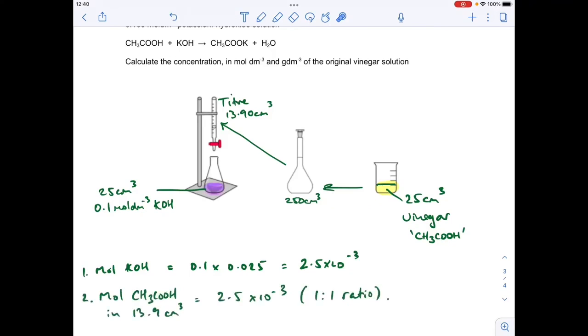Once we know the moles in the 13.9 cm cubed titer, we need to scale up to how many moles must have been in this 250 cm cubed, and hence in the original undiluted vinegar solution. The way we do that is we divide the moles in the 13.9 by 13.9, and that gives us the moles in 1 cm cubed, and then multiply up by 250, which will tell us the moles in there, but more importantly, the moles in there.